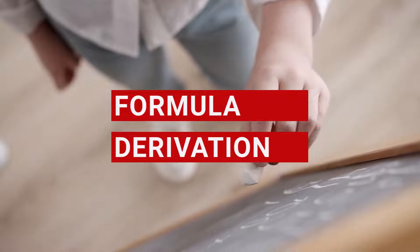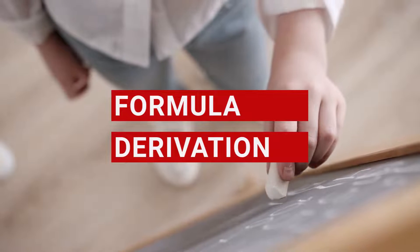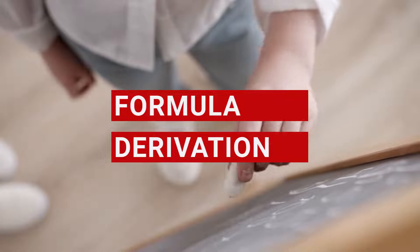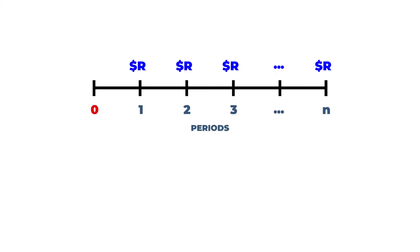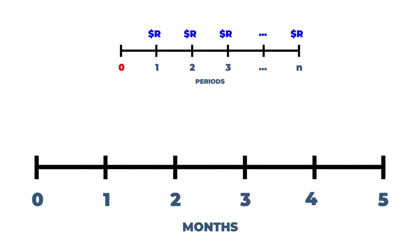To understand how the present value of annuity formula works and how it's derived, consider a general timeline for an annuity consisting of N payments of R dollars beginning one period from today. For our scenario, the timeline would look like this.